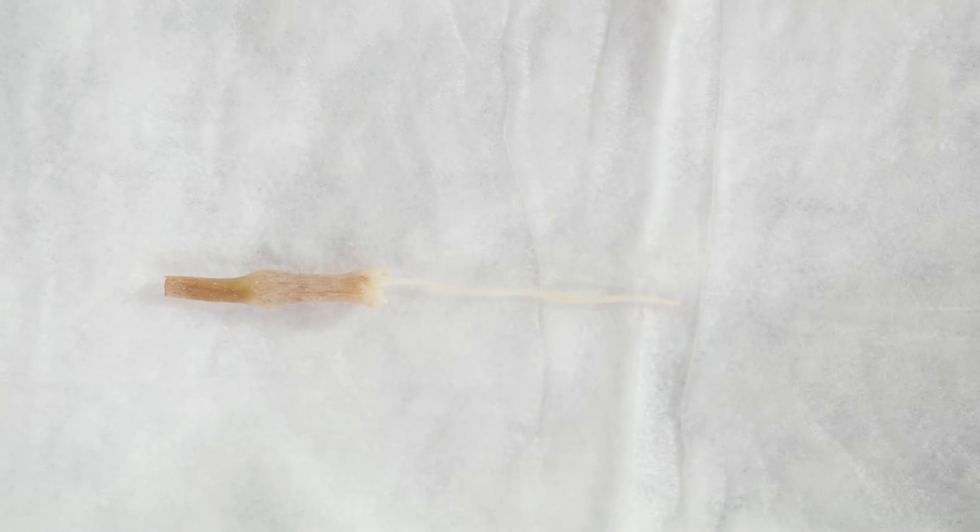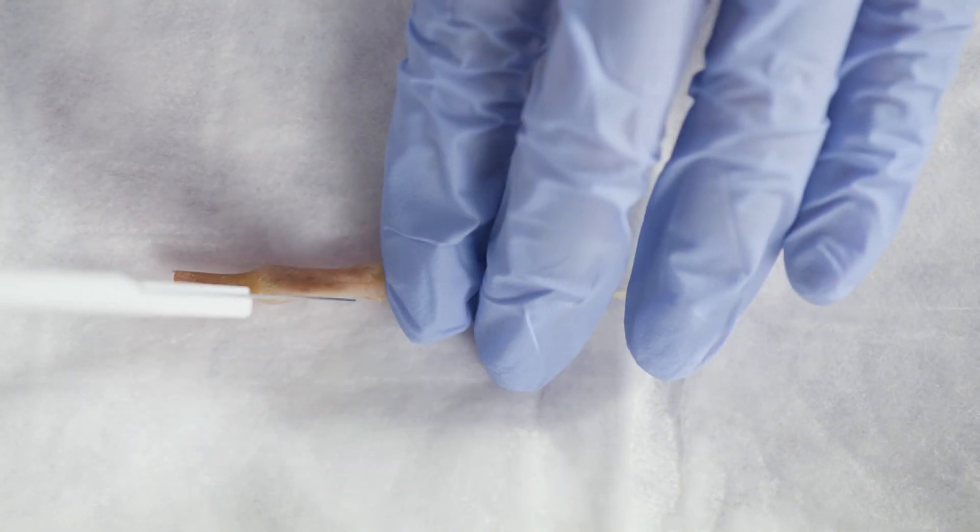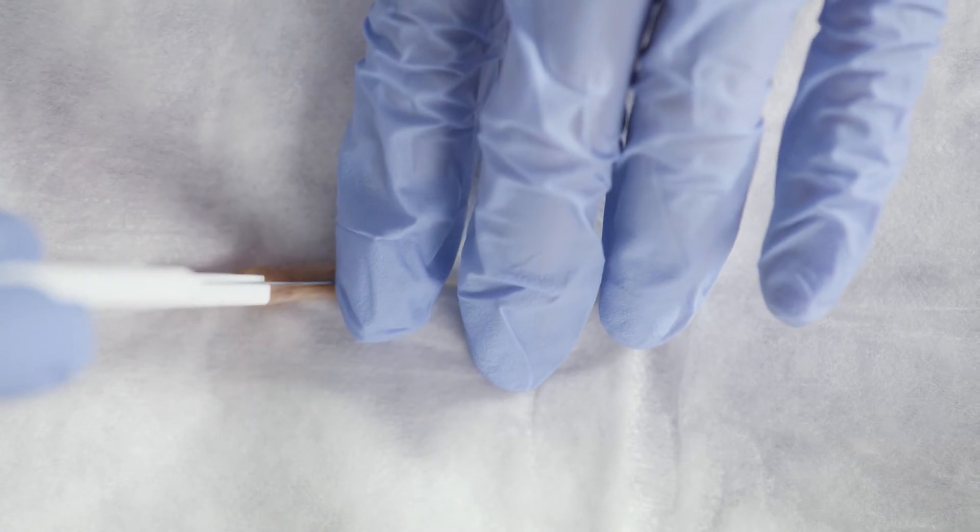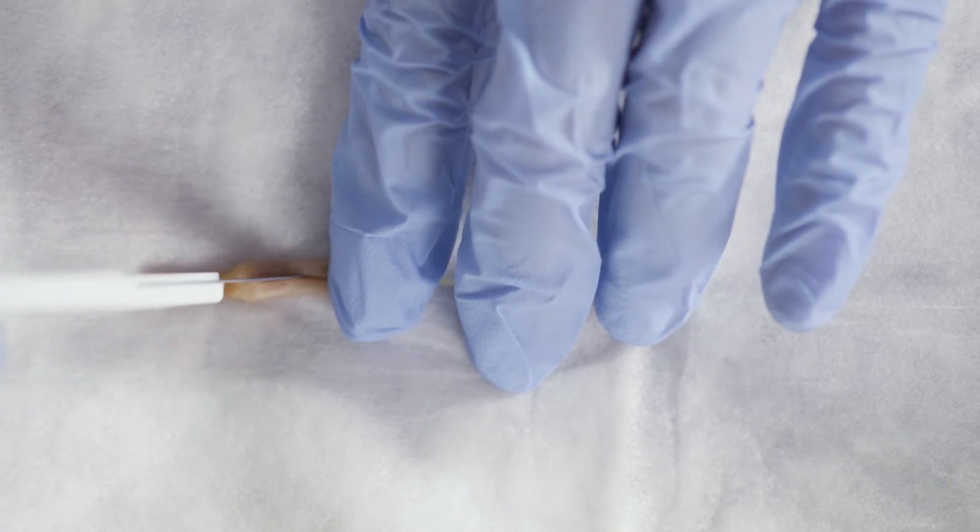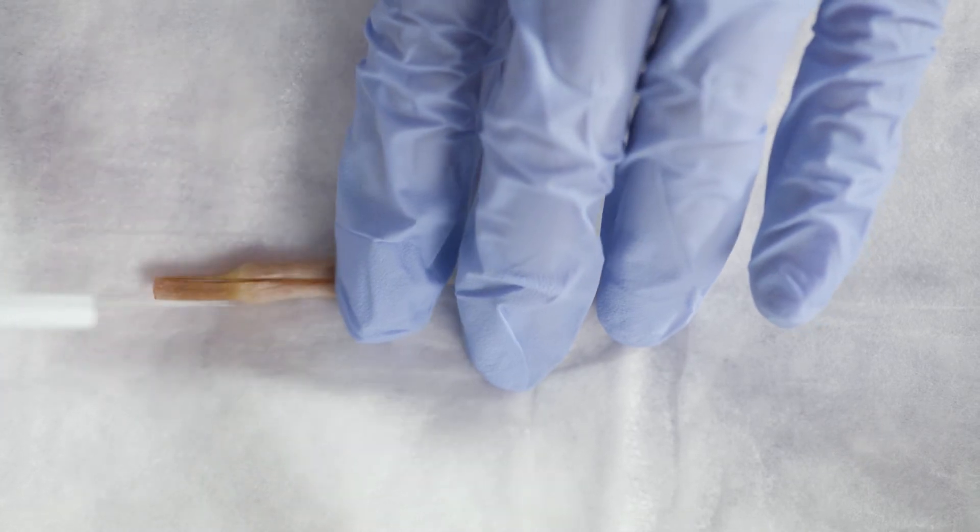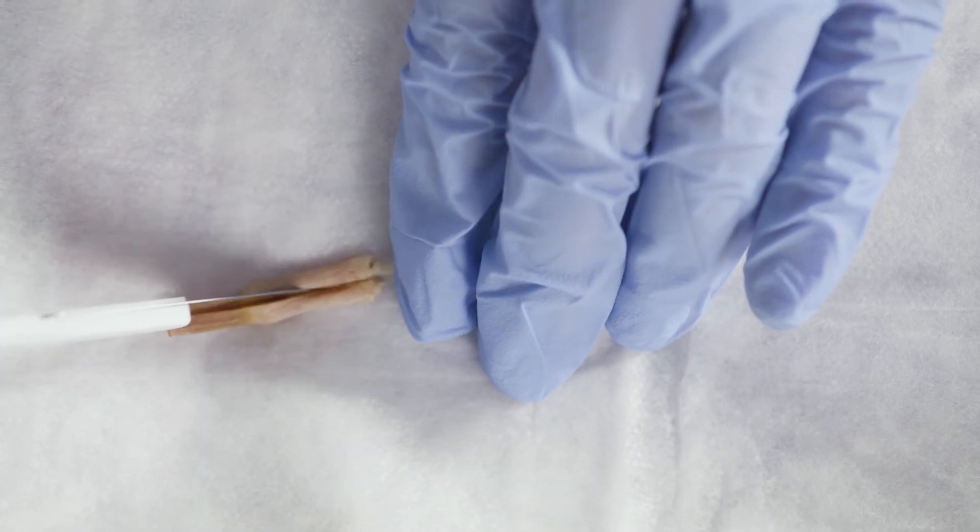In contrast, the daylily has a more obvious ovary. Here we have a daylily with the petals and stamens already removed. Within this darker structure is the ovary, and cutting it in half lengthwise reveals the structures, including the ovules, inside.